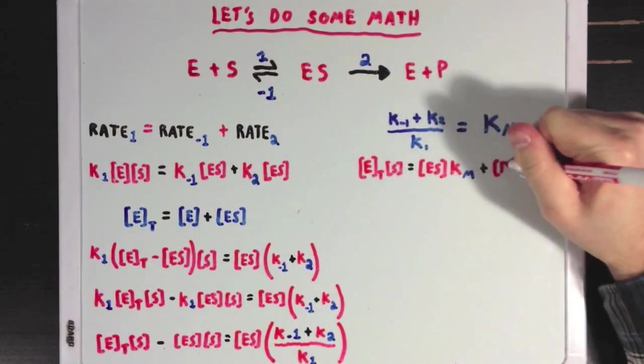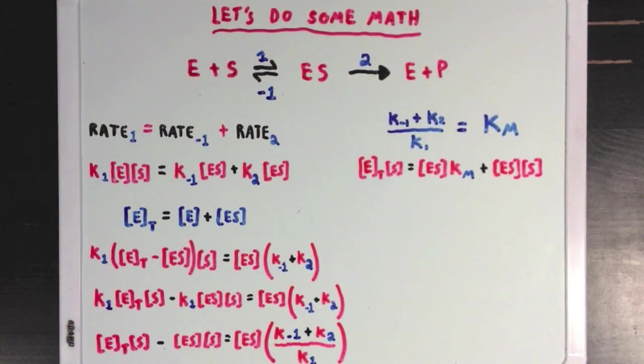So in this next line I've done two things. First I've thrown in that Km value that I just mentioned, but I've also added ES times S to both sides of the equations, and thus moved it from the left side to the right. In the next line I've done two things. First, I switch the left sides and right sides of the equation, just to keep things clear. But I've also factored out the common term ES on our new left side.